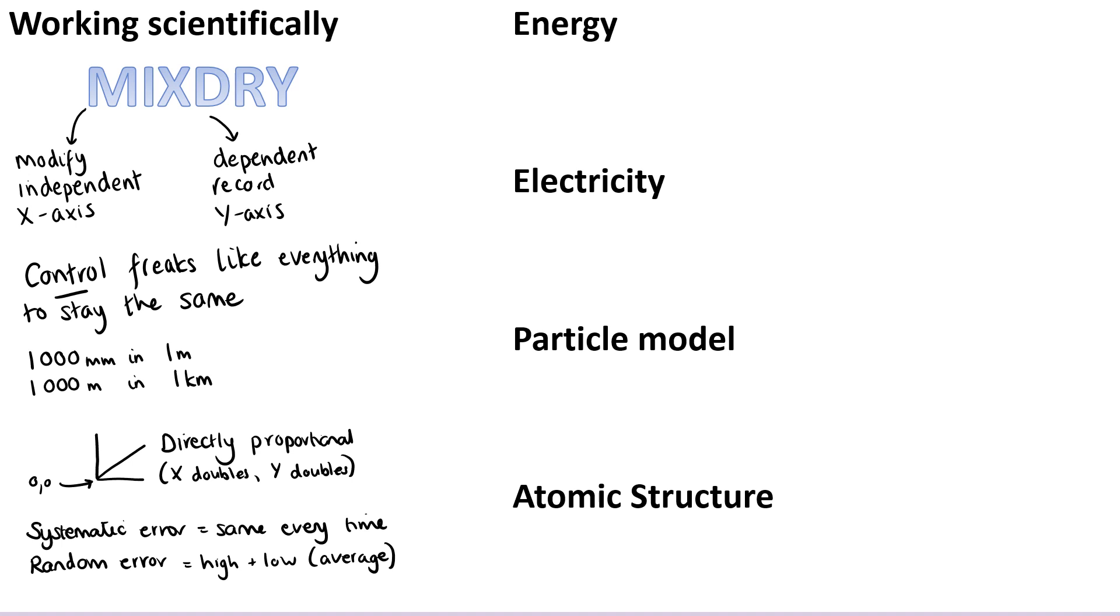Then you might choose to have some key facts written down that actually relate to the physics in this paper. So there are four topics: energy, electricity, the particle model of matter, and atomic structure and radiation. Now a lot of these don't really have very complicated facts that you're likely to forget. I think the energy topic in particular is a lot of calculations and not so much factual recall. But even so, there may be particular things that you think 'oh I'm going to forget that in the exam,' so it's better to have it ready to scribble down right at the start.